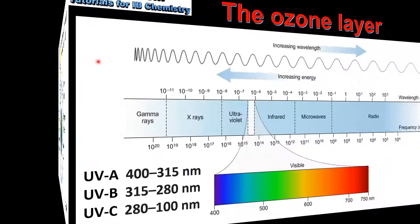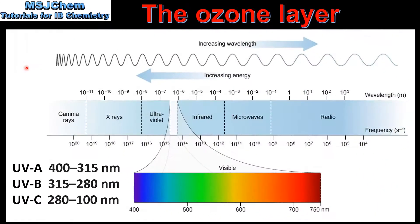We'll start by looking at the electromagnetic spectrum. Here we can see the infrared, visible light and ultraviolet regions. As we saw in the previous slide, sunlight is mainly composed of radiation from these three regions.